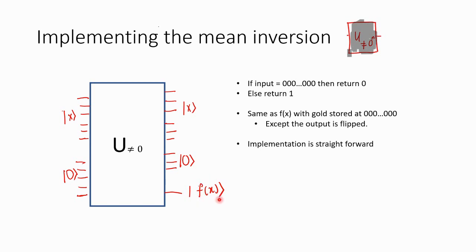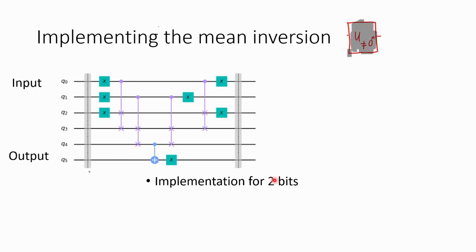Else it returns 1. So when you think about it, it is like the gold is stored in 0000 but the result will be just the opposite — if the input is 0000 it will be 1, everything else will be 0. So it's very similar to the oracle, just with the output flipped.